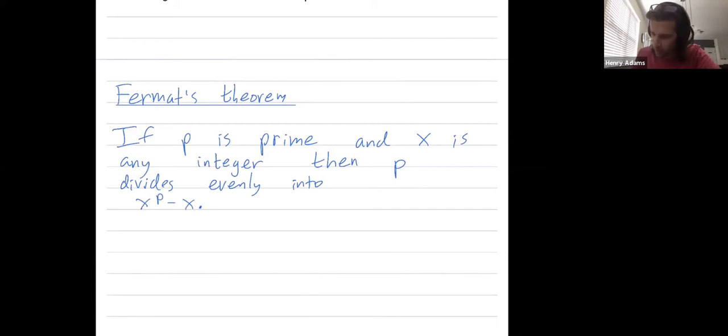So let's do some examples. You can prove this using modular arithmetic notation and ideas from group theory. Let's just do some examples. So let's take P to be 5, prime number.